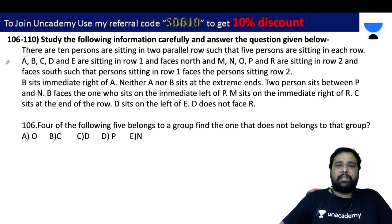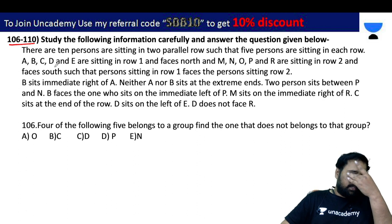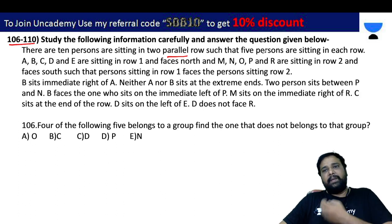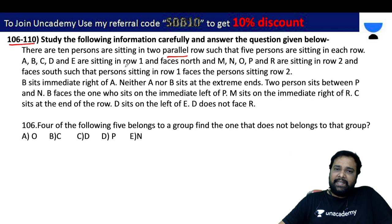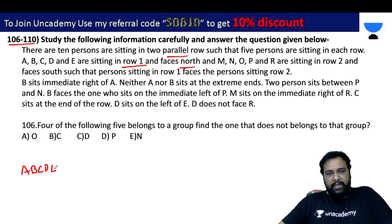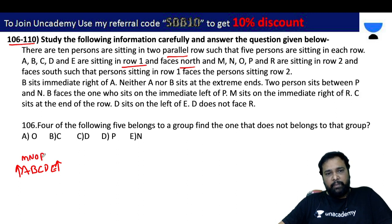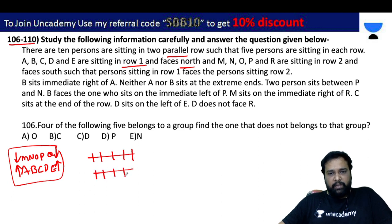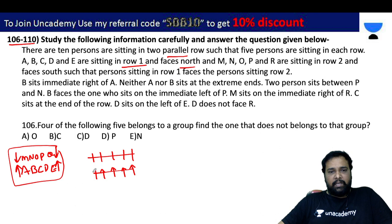Next, questions 1 to 10 involve parallel rows. There are 10 persons sitting in two parallel rows of 5 persons each. Row 1 has A, B, C, D, E facing north direction. Row 2 has the other five facing south.